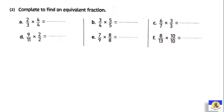Question number two: complete to find an equivalent fraction. We may need to use multiplication to get the equivalent fraction. Two over three: two by four equals eight, and three by four equals twelve — you have to make up and down by the same number. Three over four multiplied by five: three by five equals fifteen, and four by five equals twenty. Six over seven multiplied by three: six by three equals eighteen, and seven by three equals twenty-one. Nine over eleven multiplied by two: nine by two equals eighteen, and eleven by two equals twenty-two.